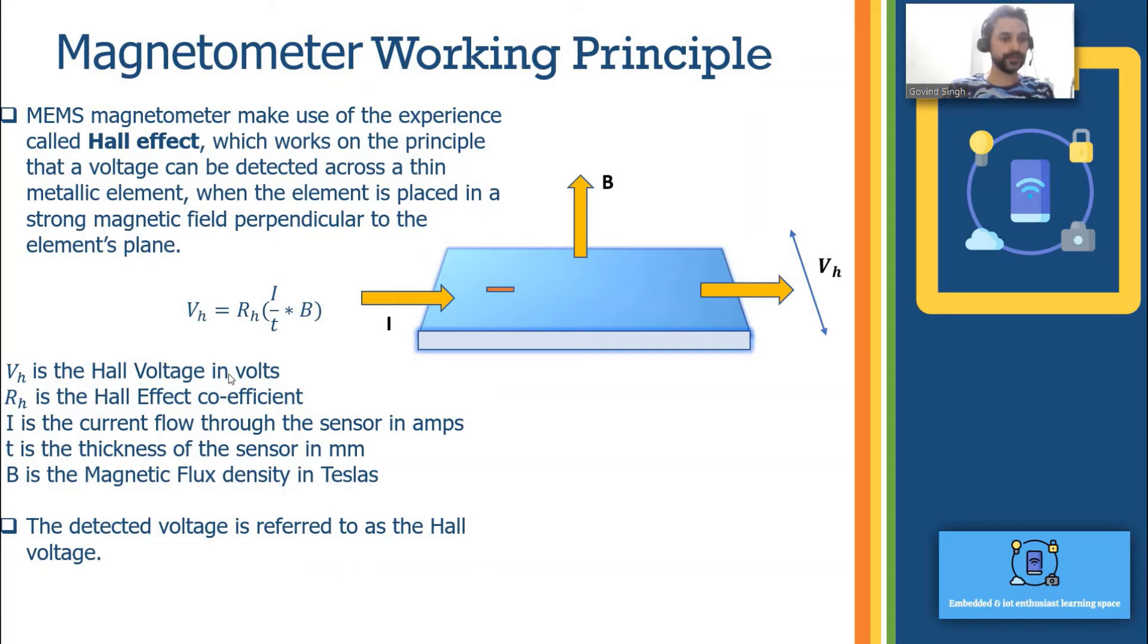If you see the equation, VH which is the Hall voltage is equal to RH times I times B divided by T. RH is the Hall effect coefficient. I is the current flow through the sensor, the current flowing on the surface of the sensor. T is the thickness of the sensor in mm and B is the magnetic field or magnetic flux density that is experienced perpendicular to the surface.